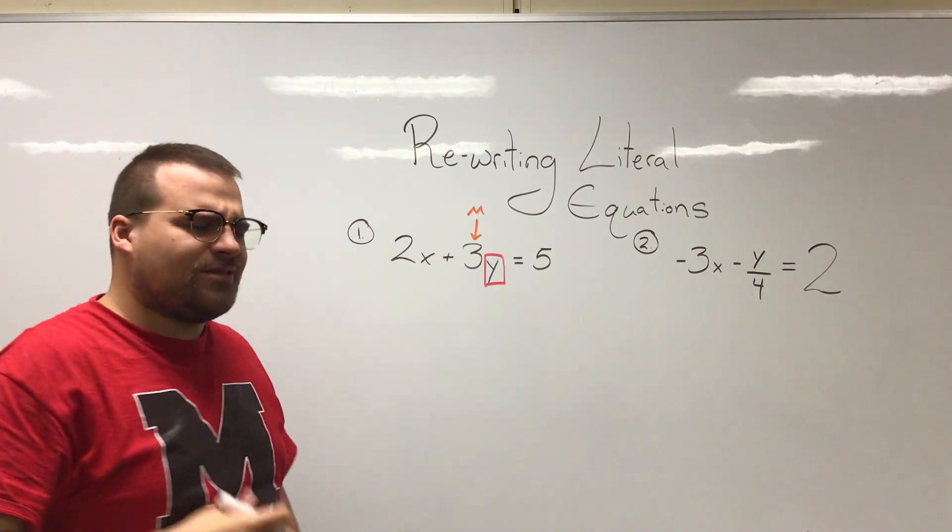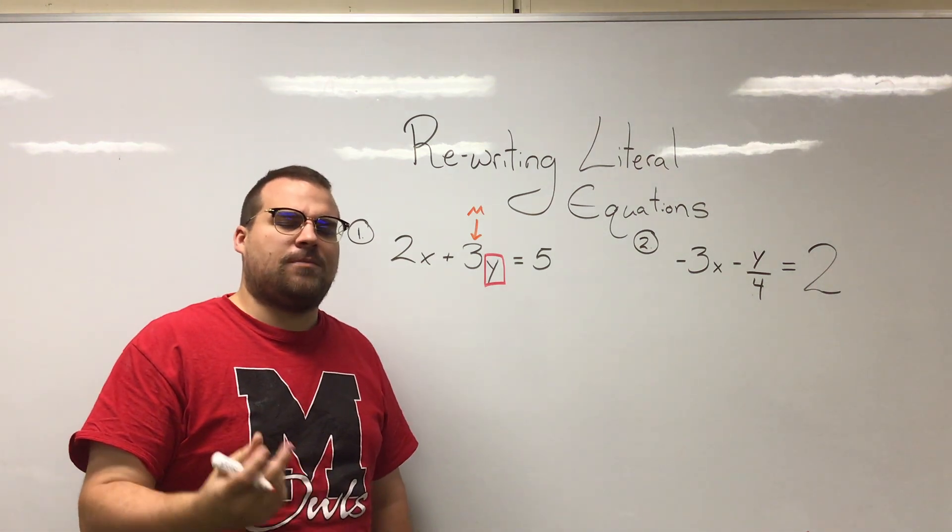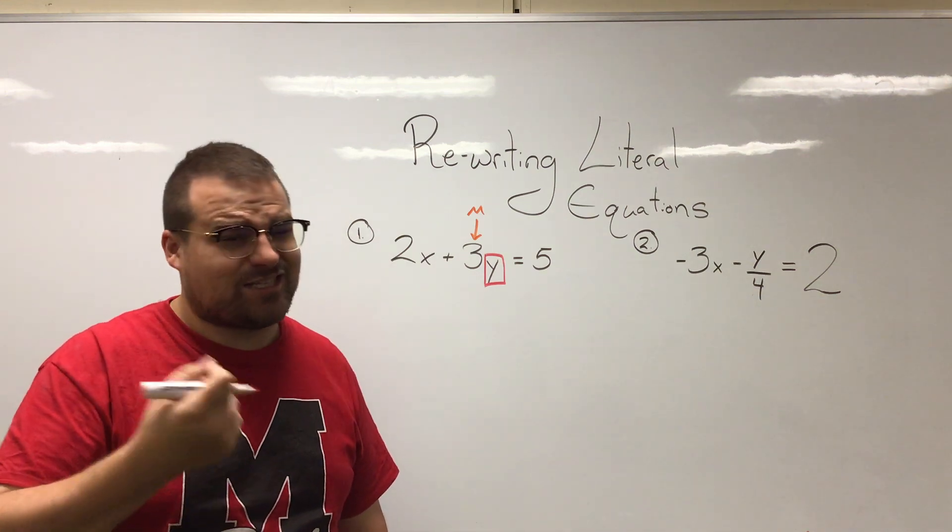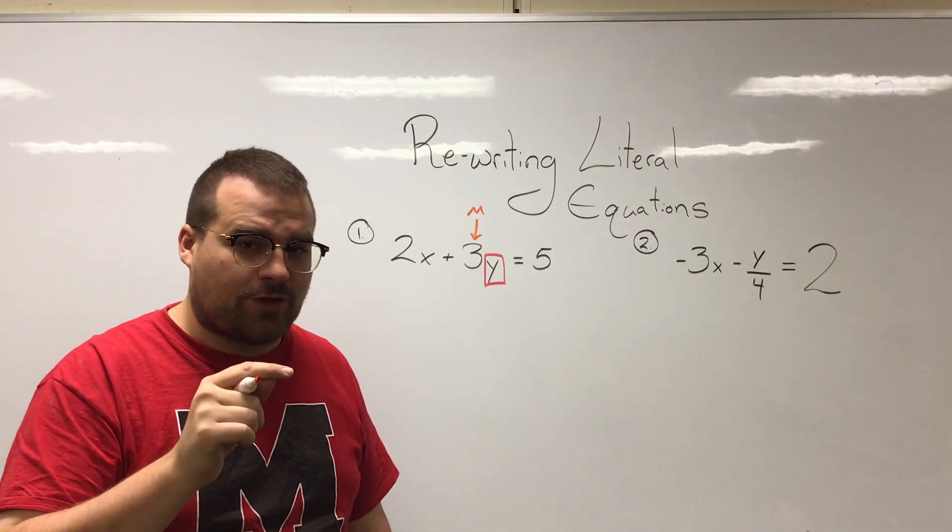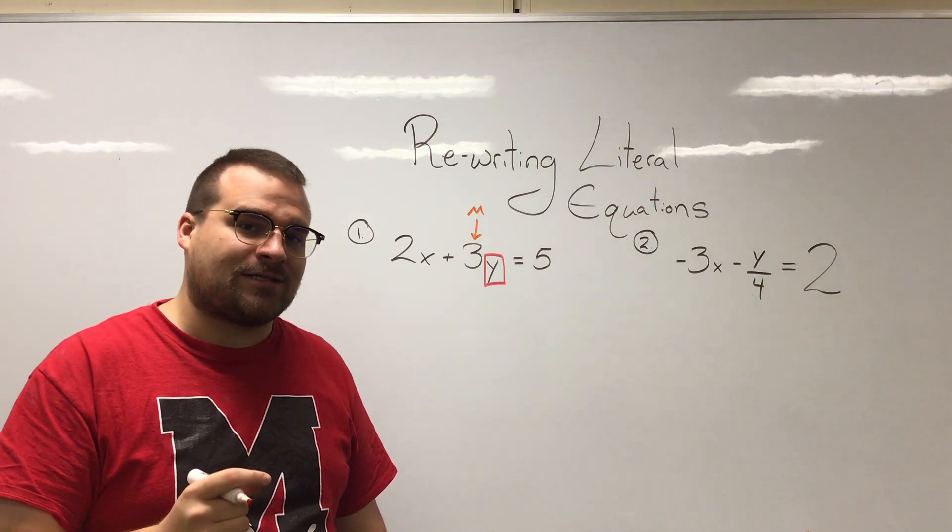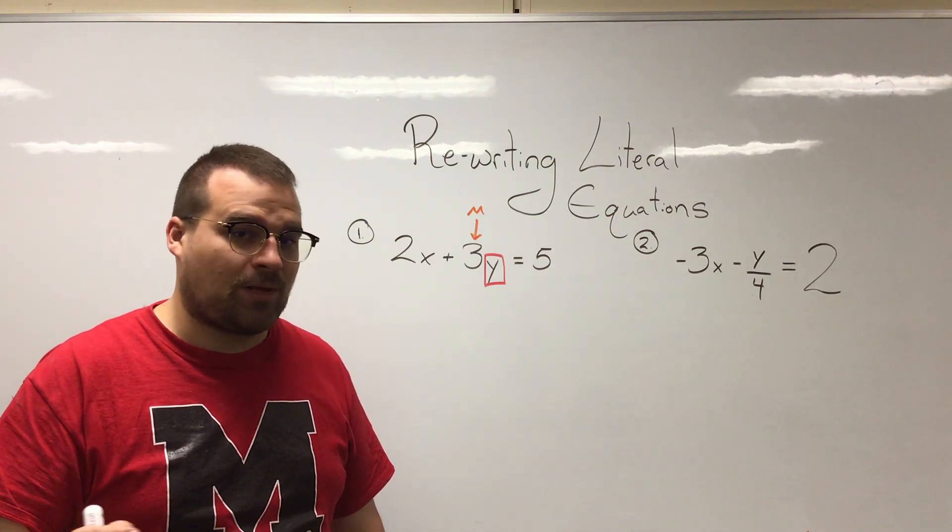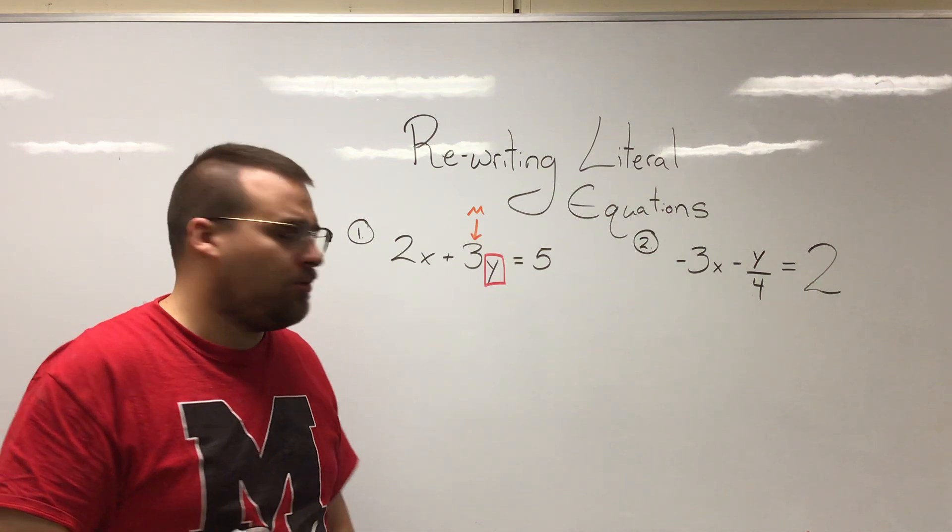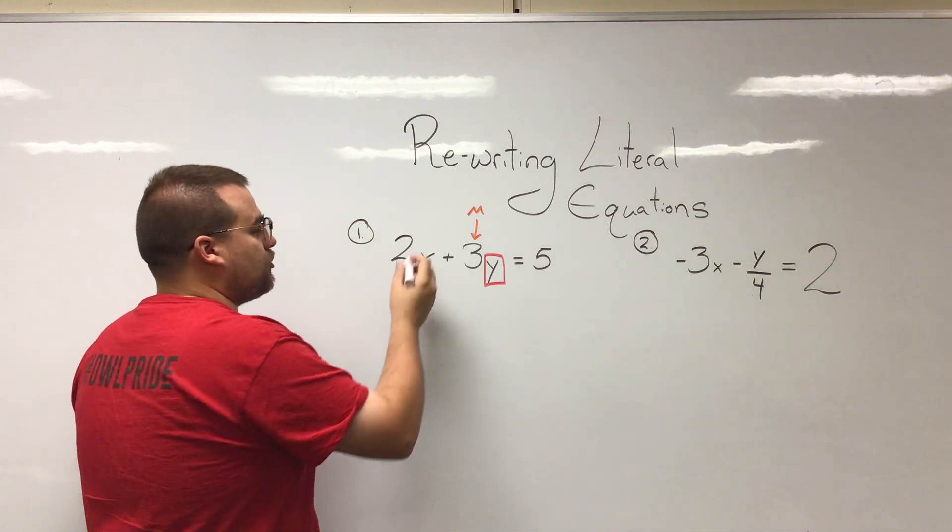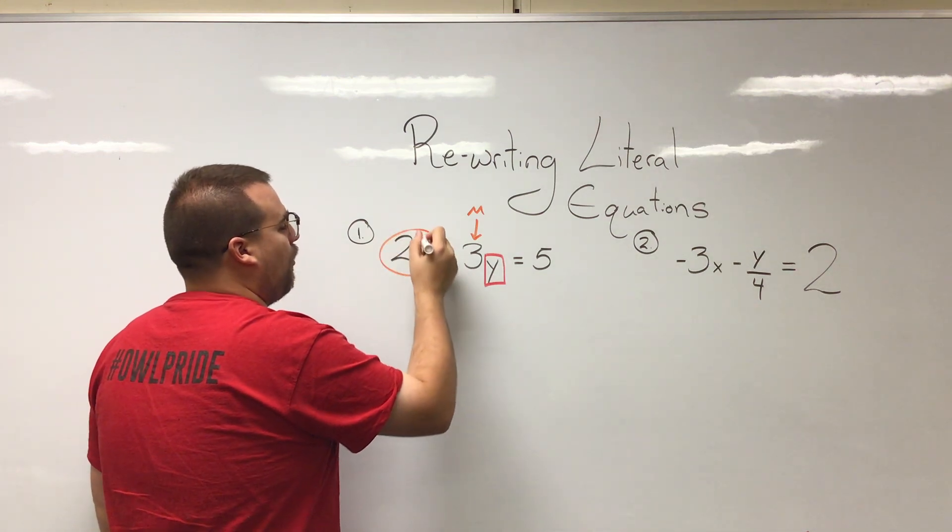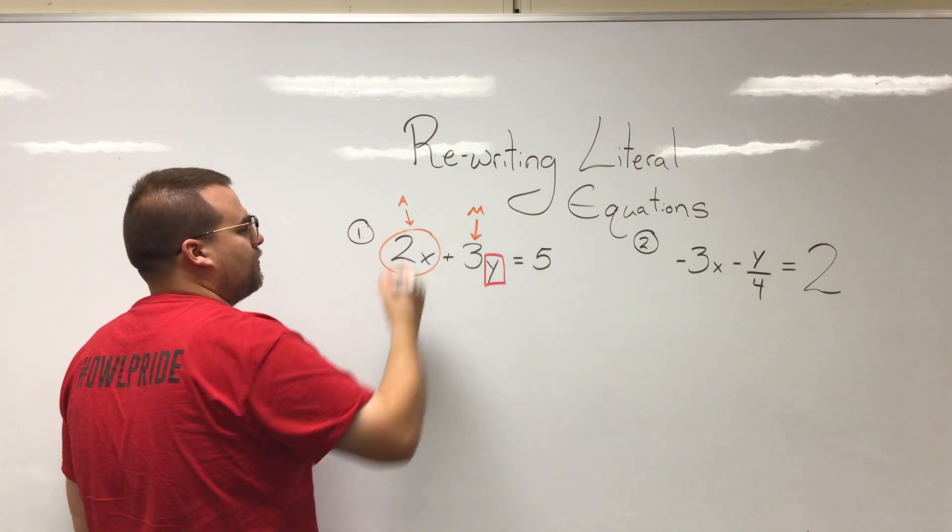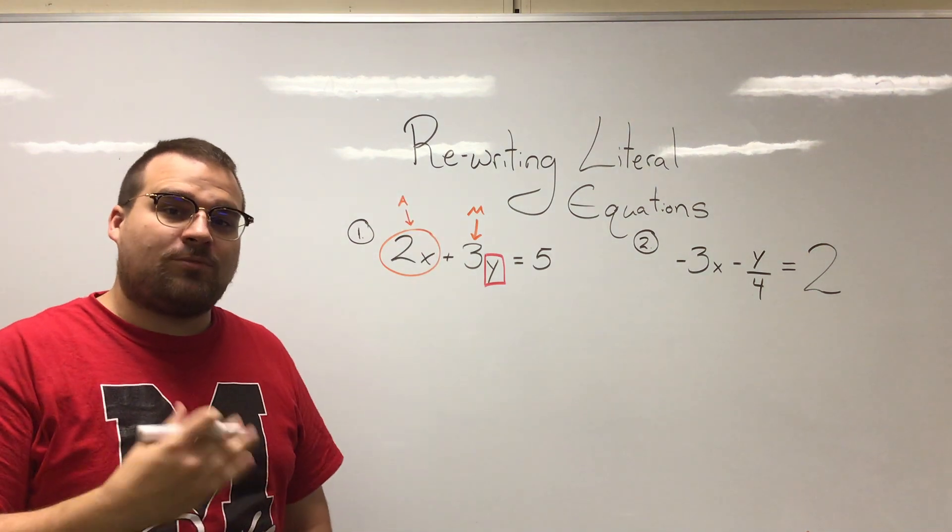We have this two and x. This is where it gets a little confusing because the two and the x are multiplying each other. However, the 2x isn't multiplying the y. What is the 2x doing to the y? The 2x as a whole is adding to the y.